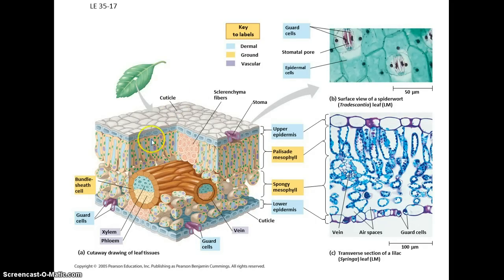Now in the leaf, we see we have again the epidermis, dermal tissue. We've got the vascular tissue, these vascular bundles. And then we've got the ground tissue all around. Here the ground tissue's major job is to carry out photosynthesis.